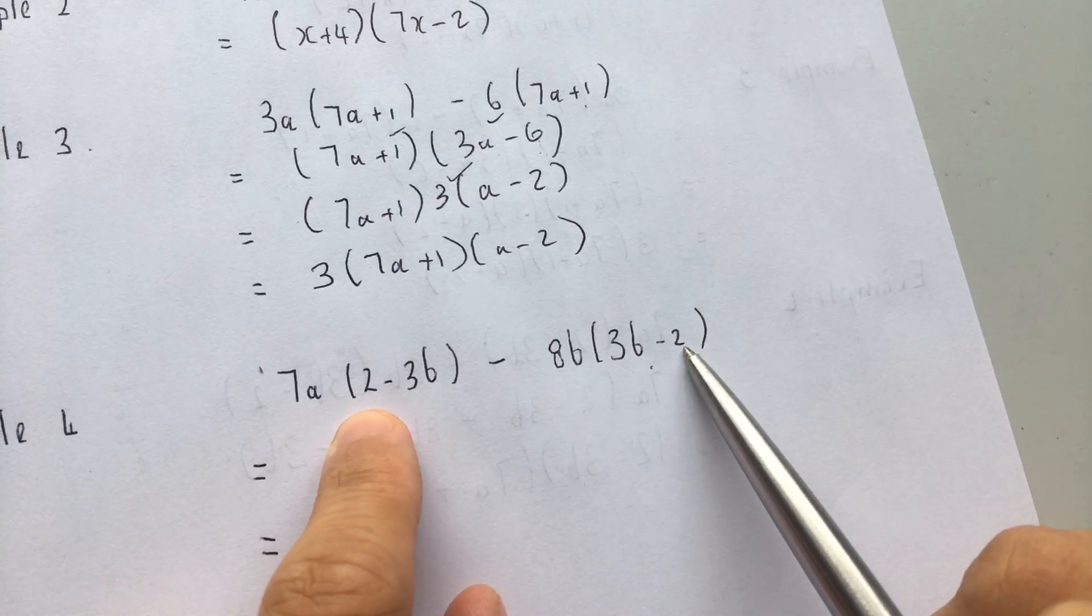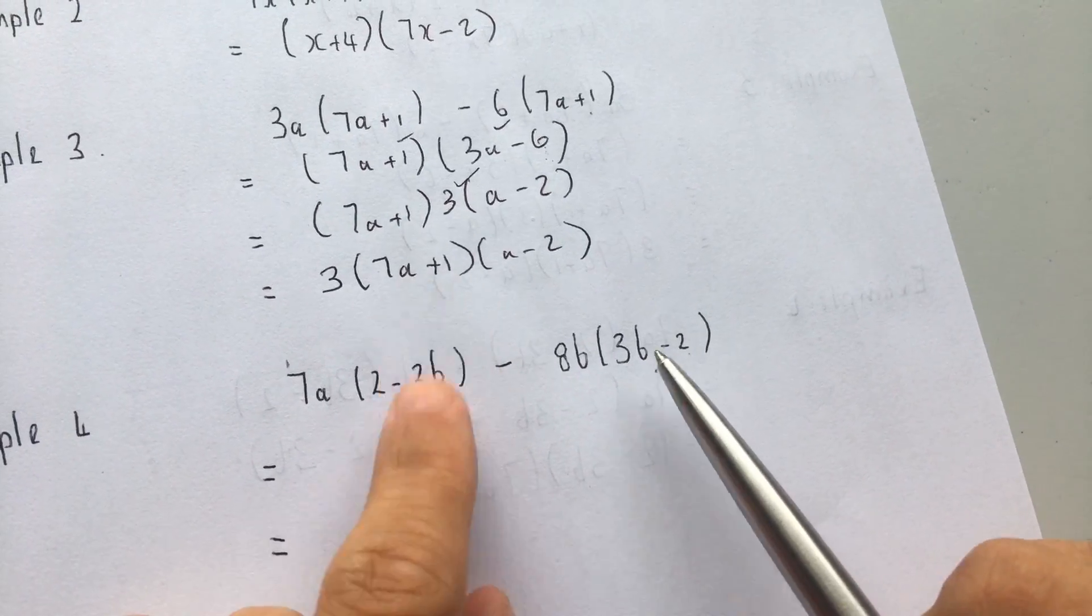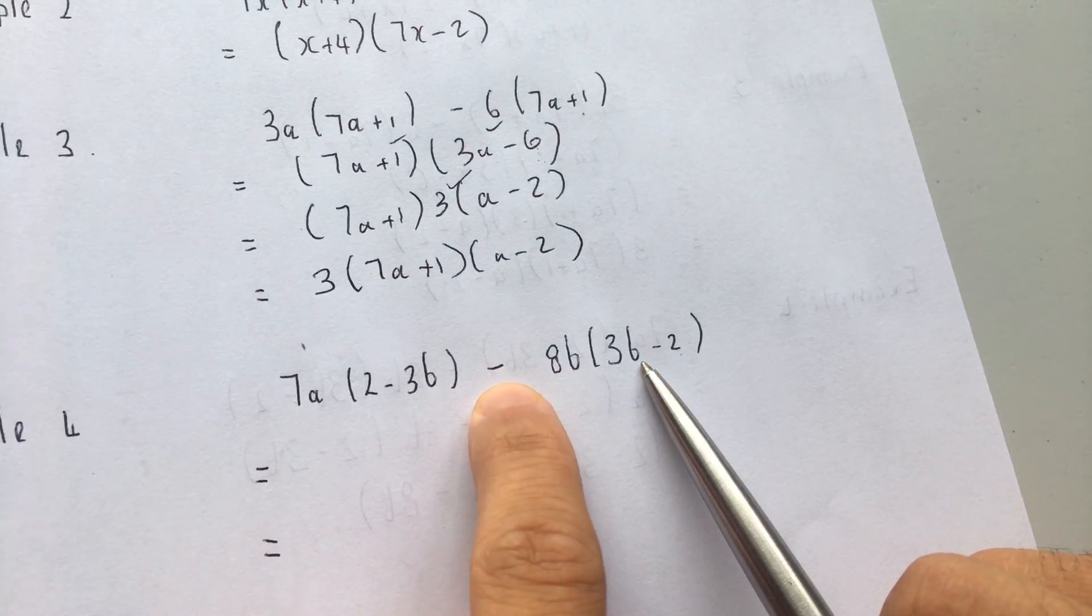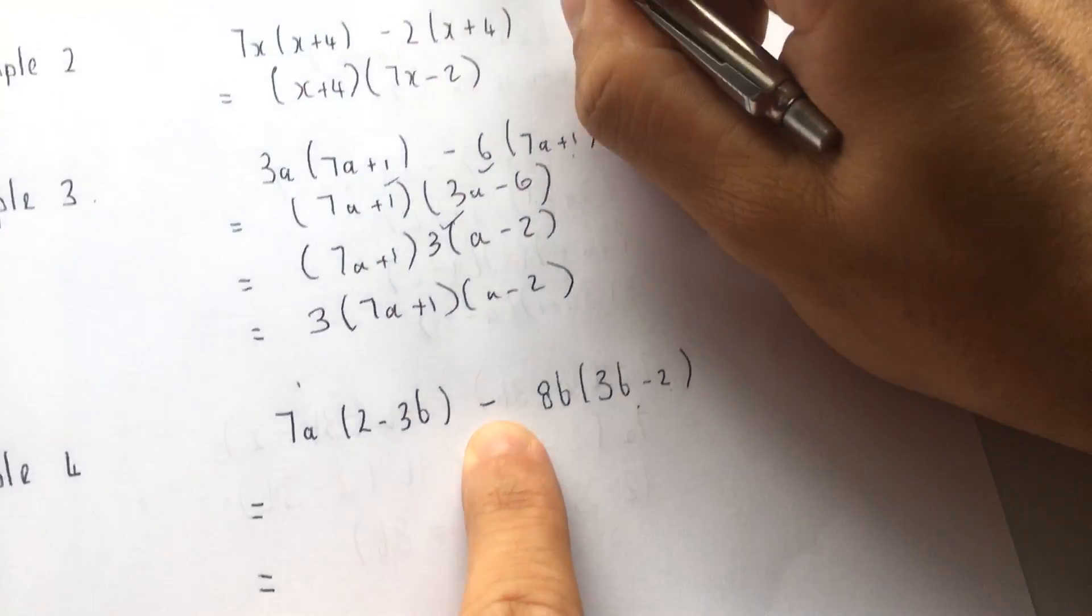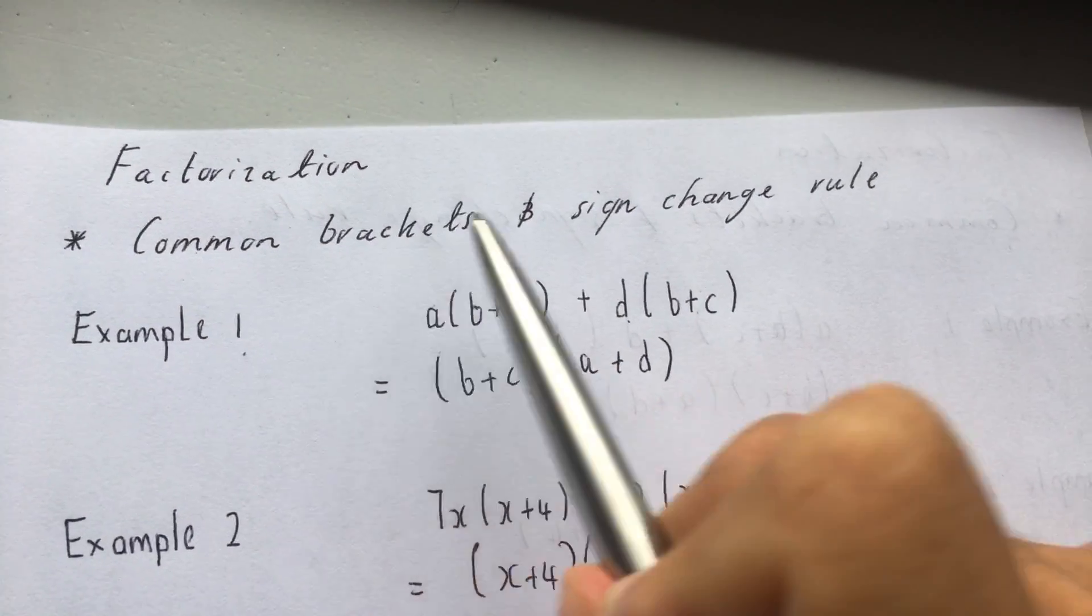So here I've got a positive 2, here I've got a negative 2. Here I've got a negative 3B, here I've got a positive 3B. So the way we sort this bracket out, is we change that sign there. If you go to the top of the page, it's called sign change rule. So it's common bracket, but sign change rule.